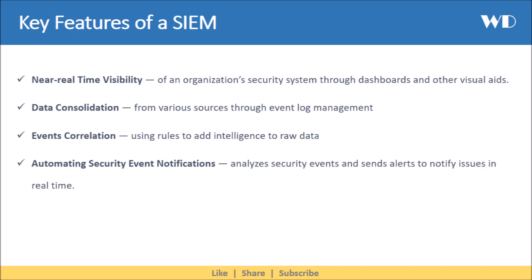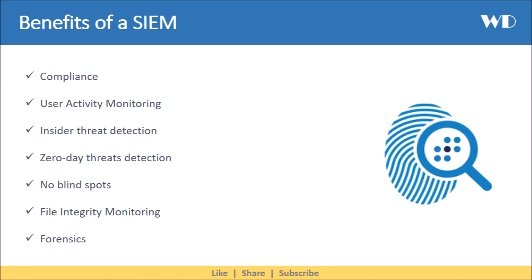Based on alerts generated, the security team acts immediately to protect the organization from any cyber attack. Some key features of SIEM are that it provides near-real-time visibility to an organization's security system through dashboards and other visual aids. It helps in data consolidation from various sources through event log management. It further does events correlation using rules to add intelligence to raw data. It also allows you to automate security event notifications, which helps analyze security events and send alerts to notify issues in real time.